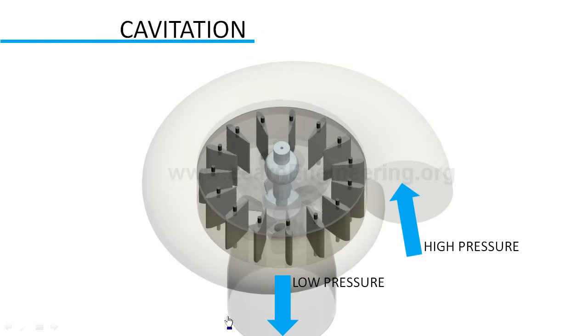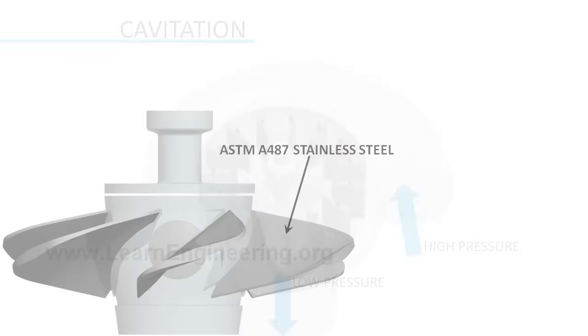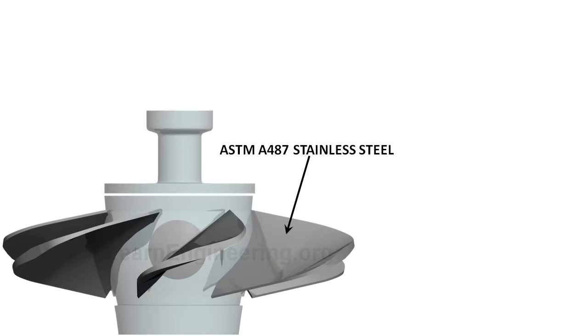Cavitation is unavoidable in Kaplan turbine, since in most of the regions pressure goes very low. But damage due to cavitation can be reduced by using suitable blade material and use of anti-cavitation fin.